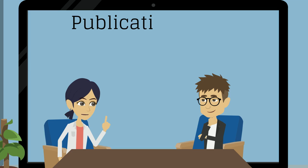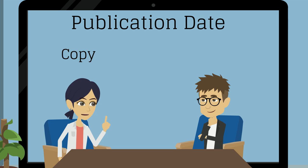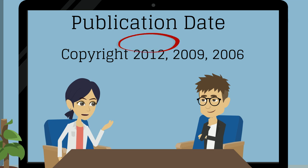Another important term is the publication date. This refers to the time that the cited text was published. Usually a publication date is just a year. Sometimes there will be more than one date listed because the text was republished. If this is the case, you should use the later date, as in the date the edition you are using was published.